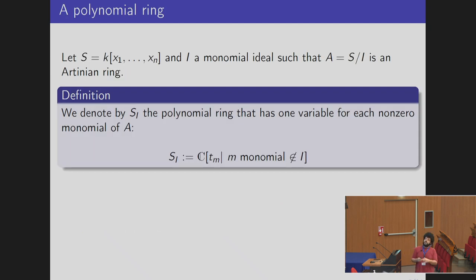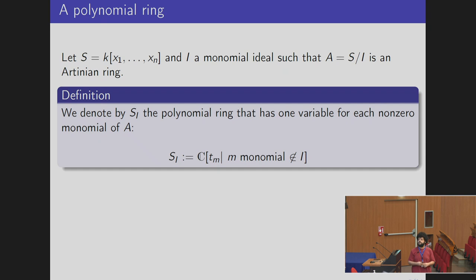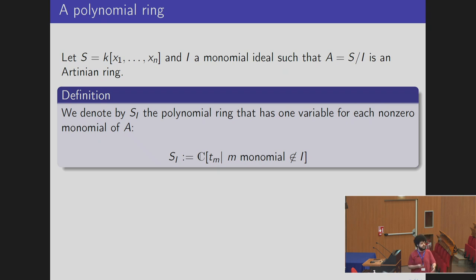To do that we need to introduce a new polynomial ring. We have our polynomial ring over k, which can be any infinite field, and I is a monomial ideal such that the quotient is Artinian. We define a new polynomial ring that depends on I, where the base field is the complex numbers and for each non-zero monomial in the Artinian ring we have one variable — we call it t_m, where m is the monomial index.